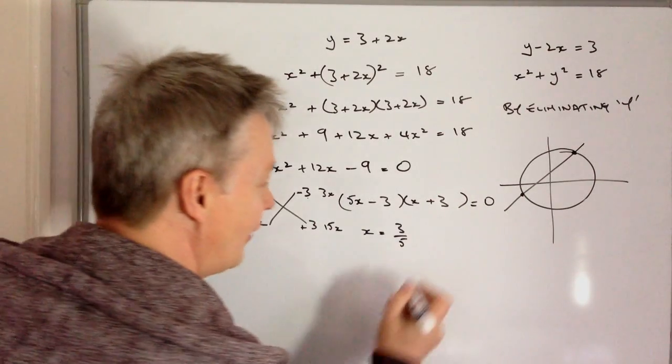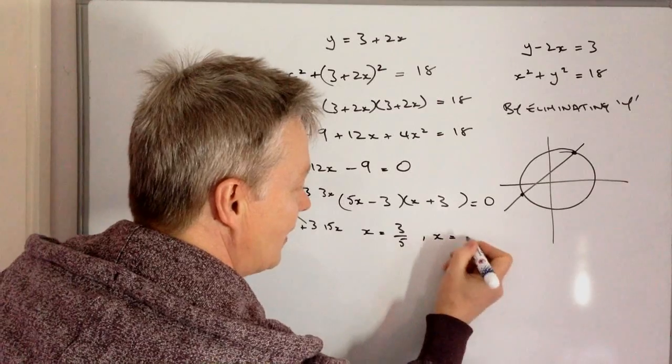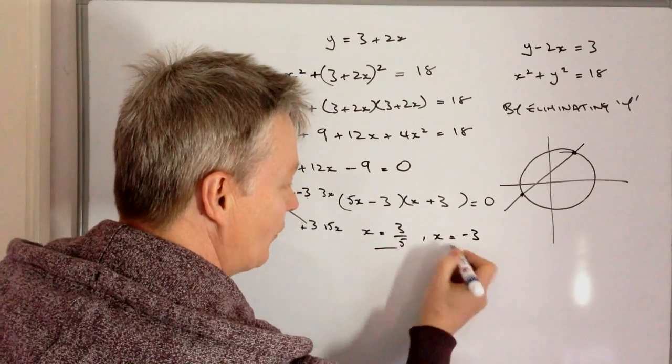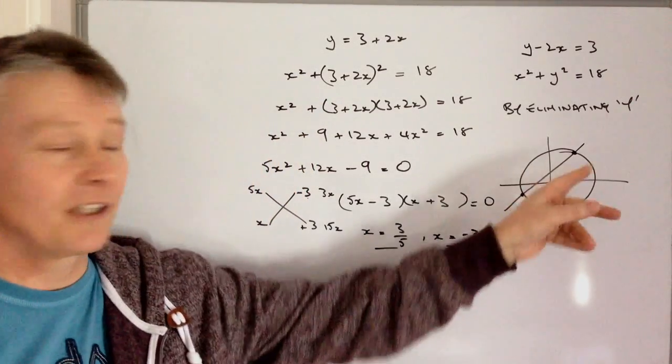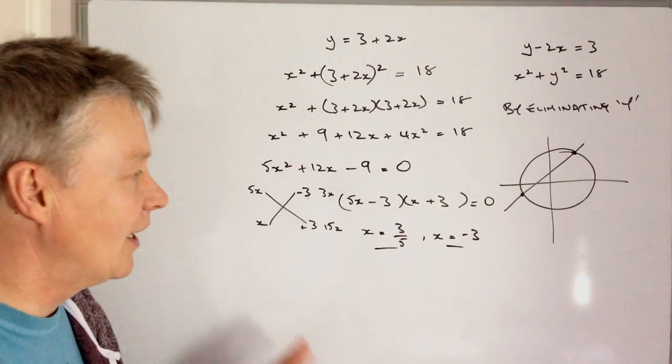And also x equals minus 3. So I've got my two values of x, which are going to be on this particular graph. So I need to now take these two values and plug them into this equation.